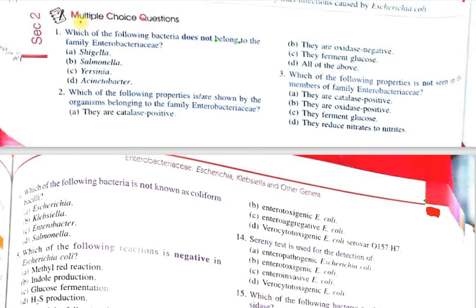The first question is: which of the following bacteria does not belong to the family Enterobacteriaceae? A. Shigella, B. Salmonella, C. Yersinia, D. Acinetobacter. Shigella, Salmonella, and Yersinia are all members of family Enterobacteriaceae, but Acinetobacter does not belong to this family. It belongs to the family Moraxellaceae.